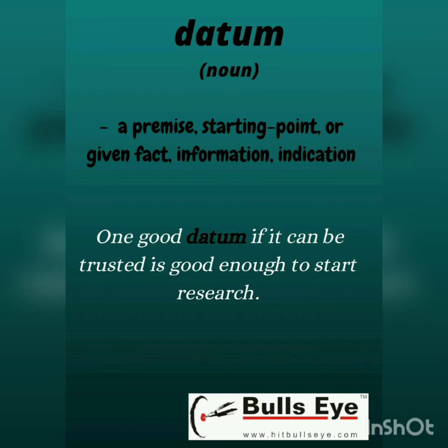The third word is datum. Datum is a premise, a starting point, a given fact — it's like an information. Kisi cheez ki shuruwaat karne ke liye aapko jo information chahiye hoti hai, that is datum. Example: One good datum, if it can be trusted, is good enough to start research. Ek valid information, ek sahi shuruwaat ke liye, agar hame mil jaye, toh hum us par research initiate kar sakte hain. That is datum — starting ke liye ek important information.